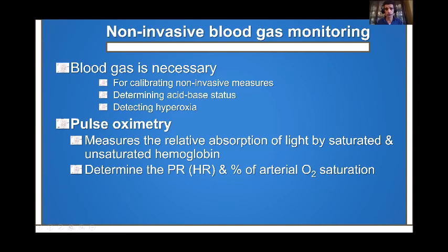The first non-invasive monitor is the pulse oximeter. It measures the relative absorption of light, comparing saturated to unsaturated hemoglobin. It does not identify which type of unsaturated hemoglobin is present. So even if the hemoglobin is carboxyhemoglobin or methemoglobin, it cannot distinguish or measure those specifically — it only tells you the difference between saturated and unsaturated hemoglobin. Therefore, pulse oximetry is not a good way to measure methemoglobin, for example.